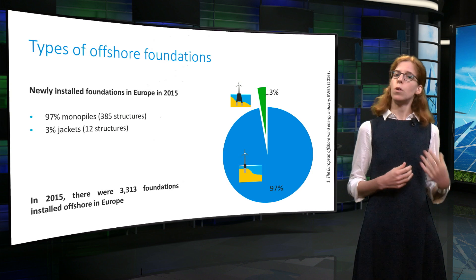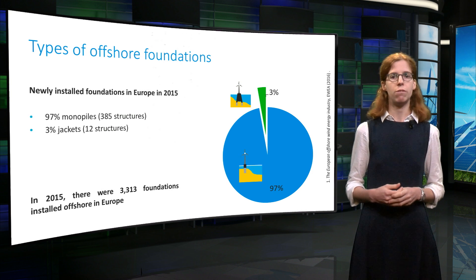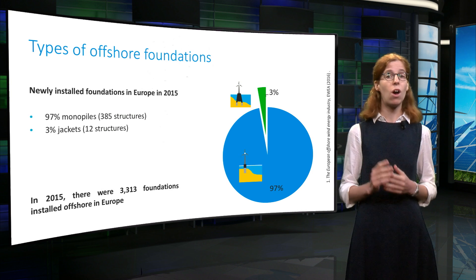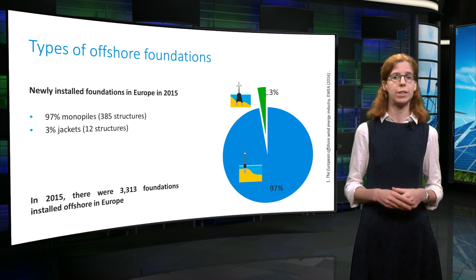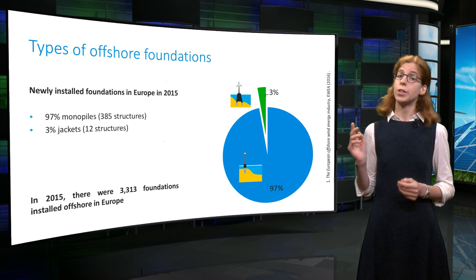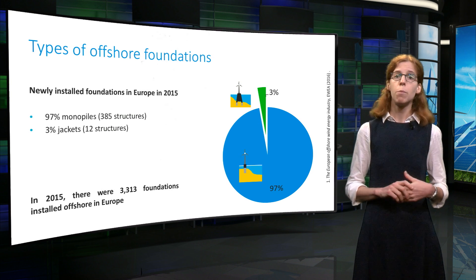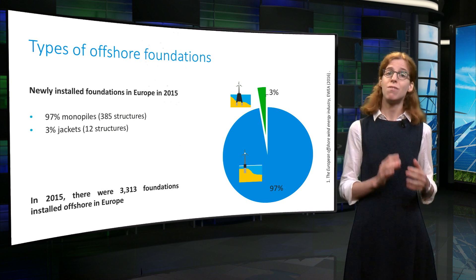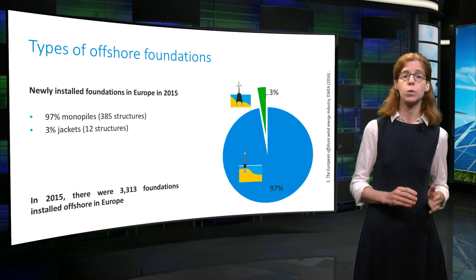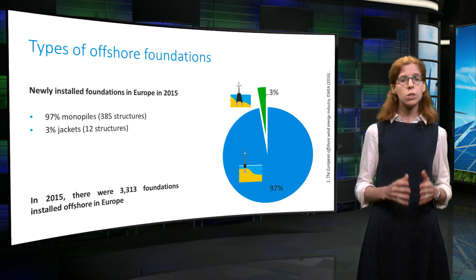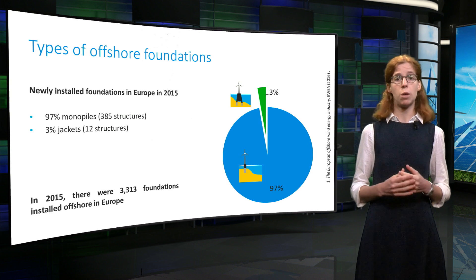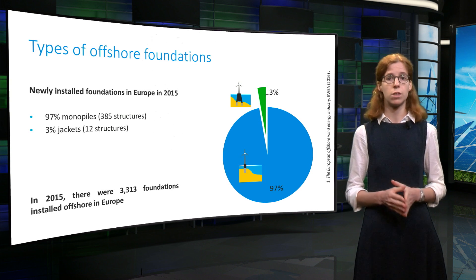Although other types of foundations have been developed, monopiles and jackets were the only two types installed in 2015 in Europe. As you can see on these slides, monopiles are by far the most widely used. As a side note, the total amount of foundations installed in 2015 reached about 3,300.